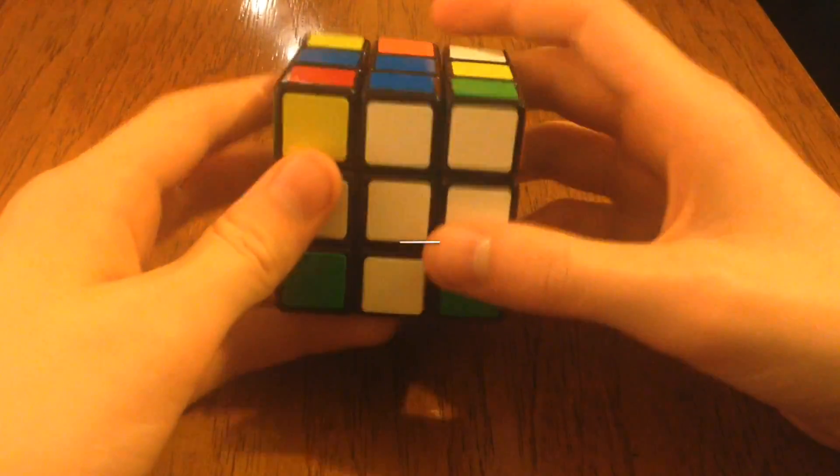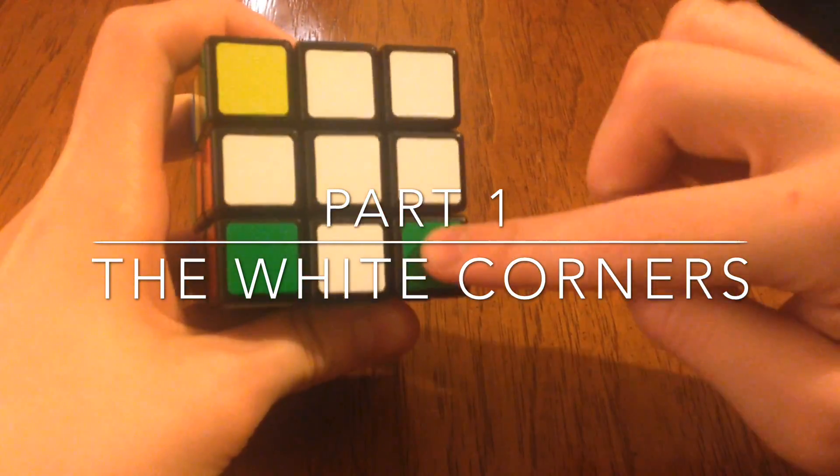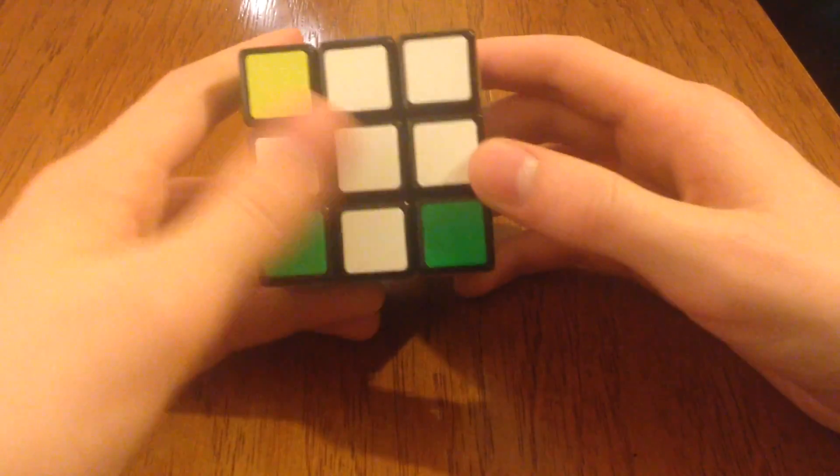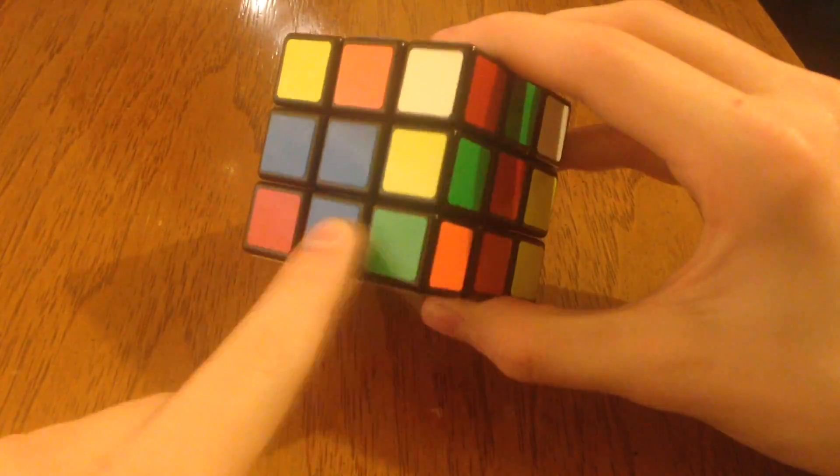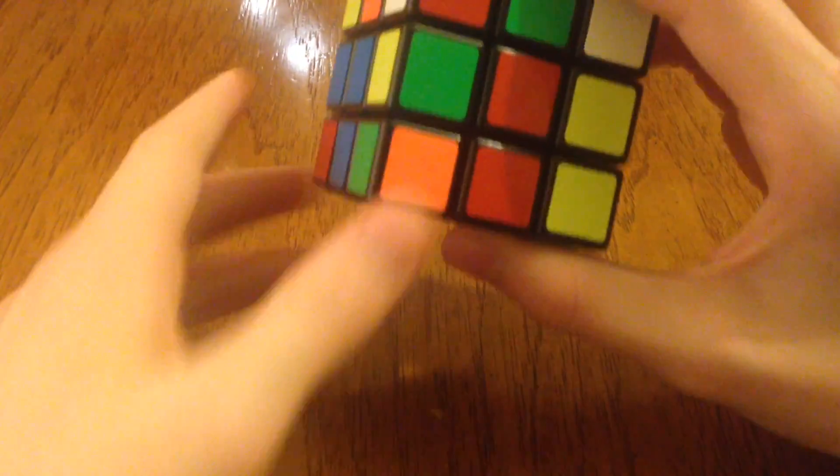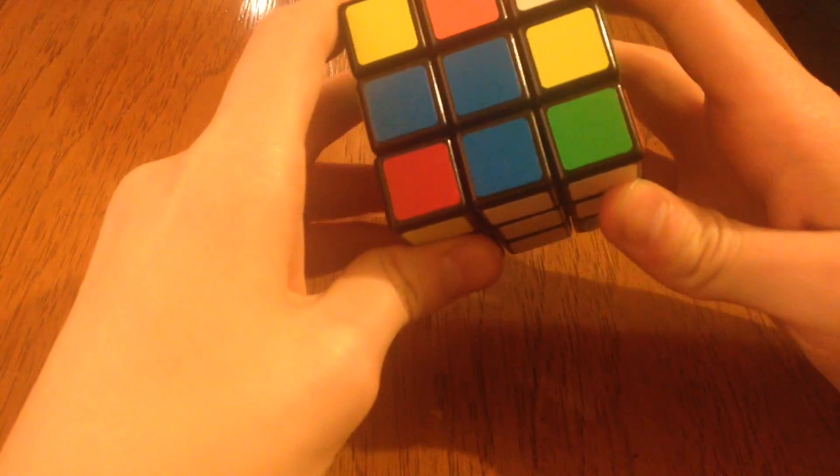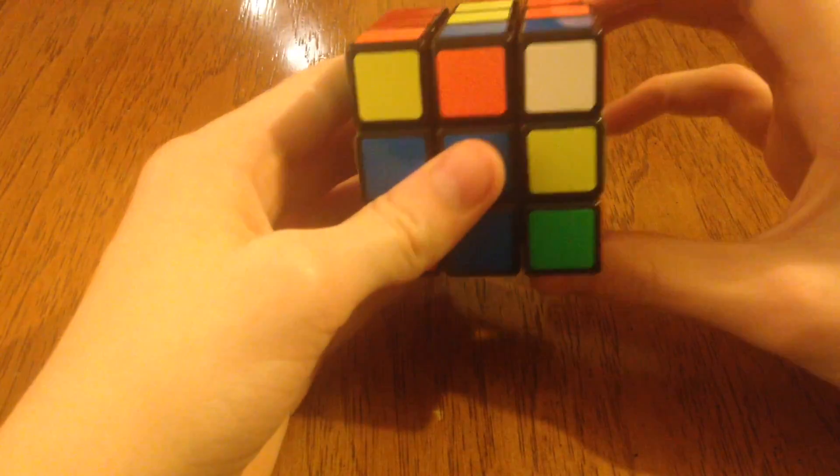Alright. So in this step, we are going to be putting the four white corners to complete the white side. But once again, you can't have any old white corner. You might look at this and say, oh, look, I've already got one. Nice. But look, it doesn't match. See? It's got to match with your other pieces. Otherwise, you're going to get halfway through the solve and realize that it's not working. So you've got to get it right the first time.